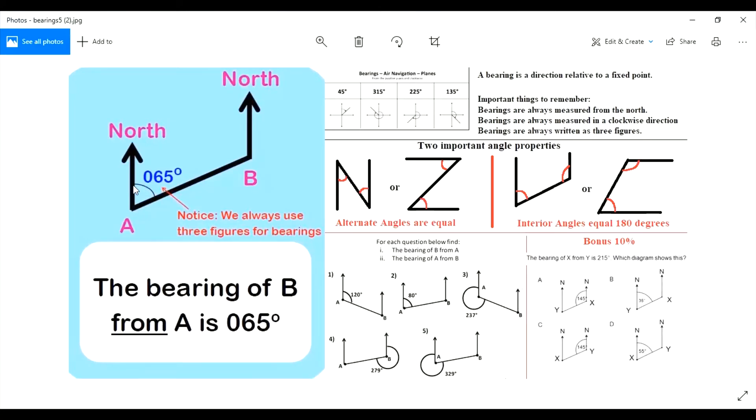If we draw an arrow instead of just a line to show the rotation, we would see that the arrow points down toward this line and toward B. So it's a bearing of B from A. A is the starting point. Any questions so far?